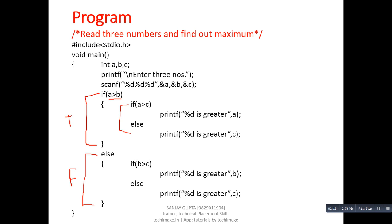If a is greater than b and a is greater than c and both conditions are true, then a will be printed as the greatest value. If the first condition — a is greater than b — is false, then control automatically transfers to the else block. Here another if-else is available which checks if b is greater than c. If b is greater than c, then b will be printed as the greatest value; otherwise, c will be printed as the greatest value.